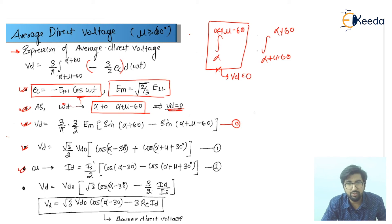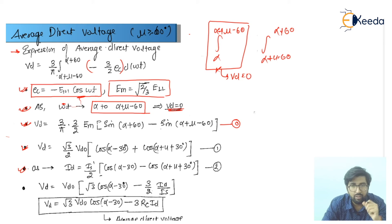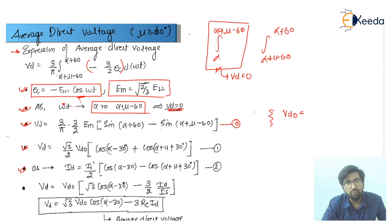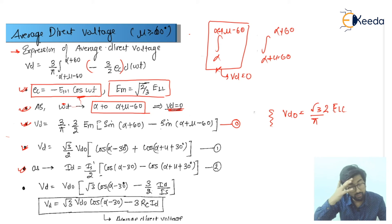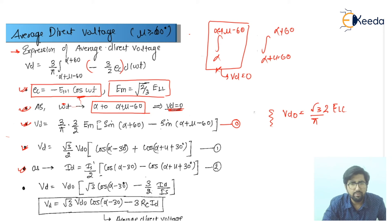Using these two equations, I can do some simplification. We need to know what VD0 is — VD0 is equal to root(3) upon pi times 2 times EL. That is the value of VD0. If I talk about ID, it equals IS/2 times cos(alpha minus 30), and after simplification putting in the values and multiplication, we get the result.